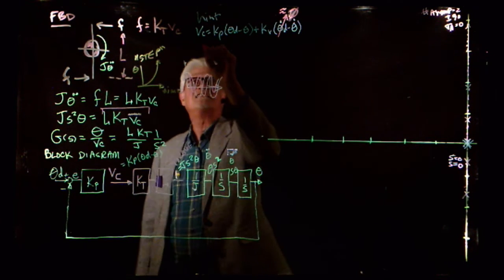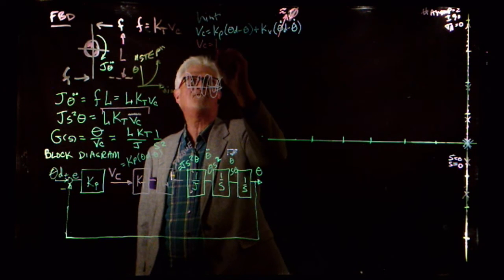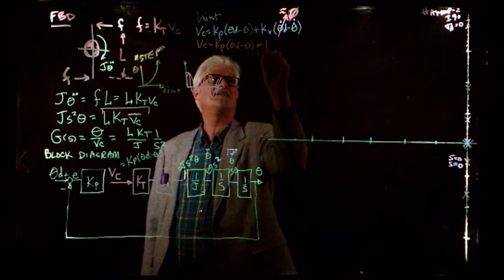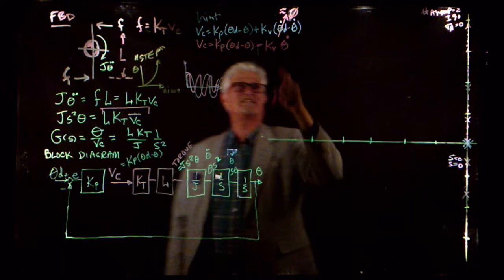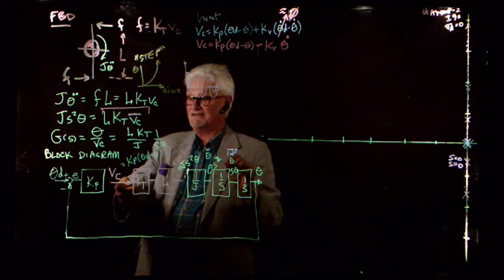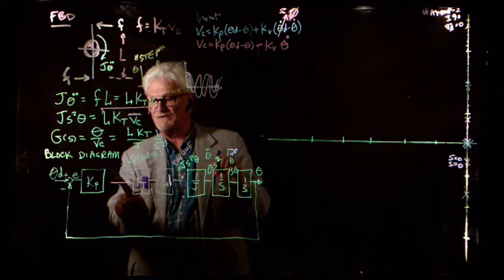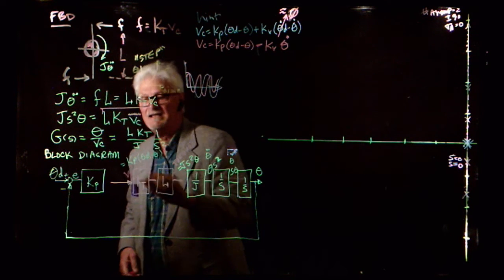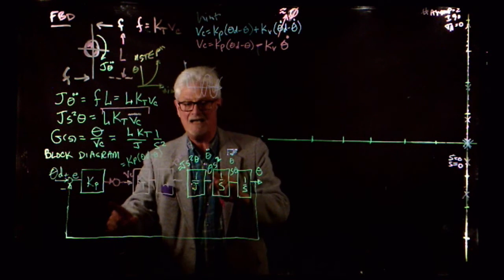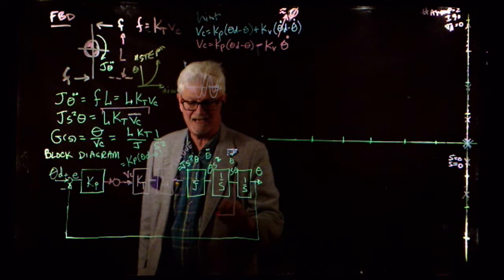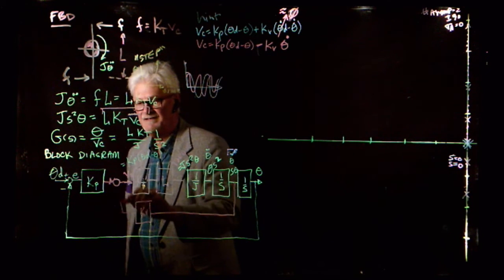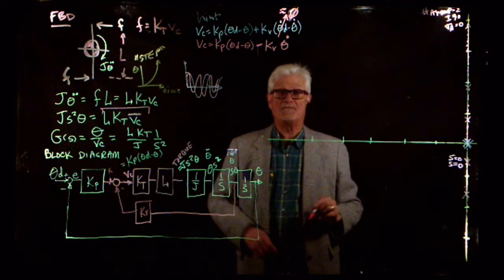So now what I can do is say that V_C — this is a modified control law — equals K_P*(theta_desired minus theta) minus K_V*theta_dot. I'm putting a term into my voltage that's proportional to theta_dot. In the block diagram, I add a summing junction with a K_V feedback from the theta_dot signal with a minus sign.